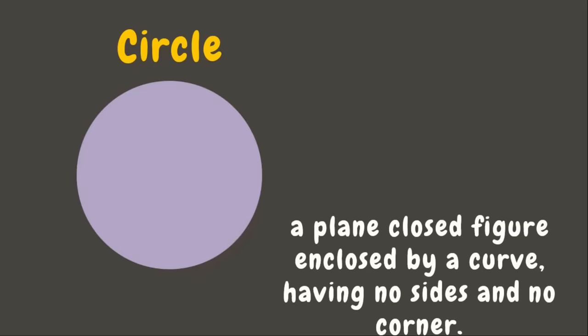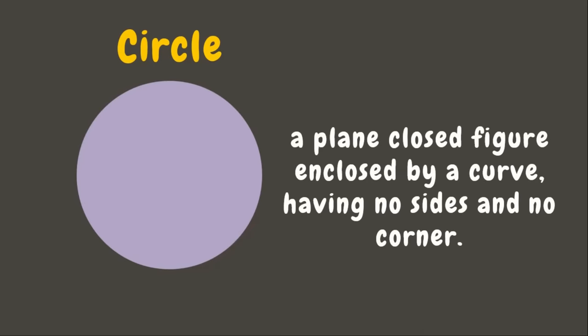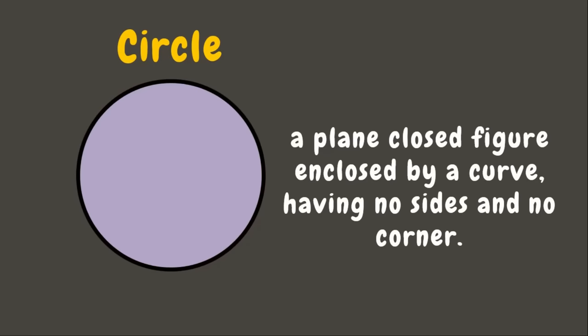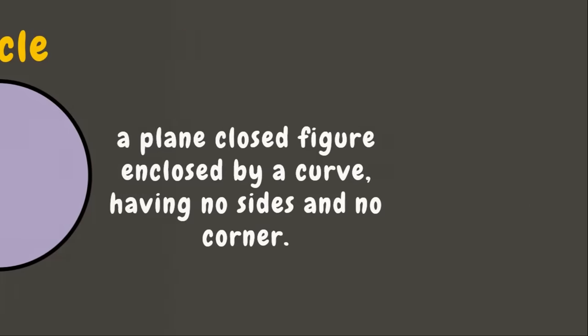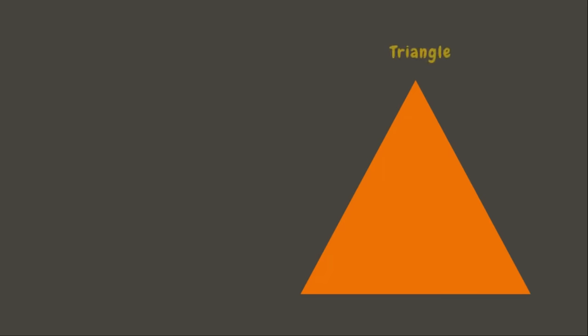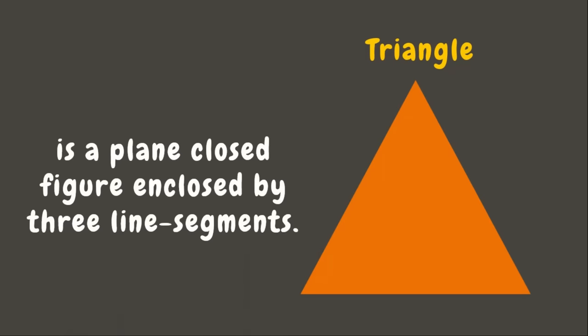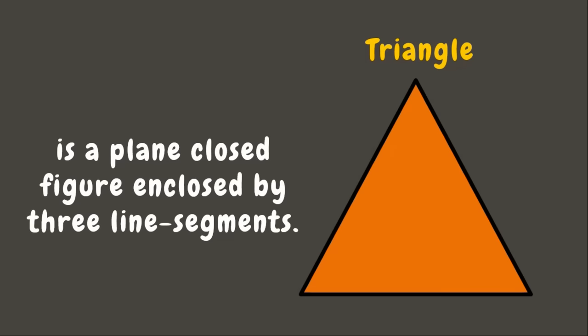Next, we have a circle. A circle is a plane figure enclosed by a curve, having no sides and no corners. Next in line is the triangle. A triangle is a plane figure enclosed by three line segments.